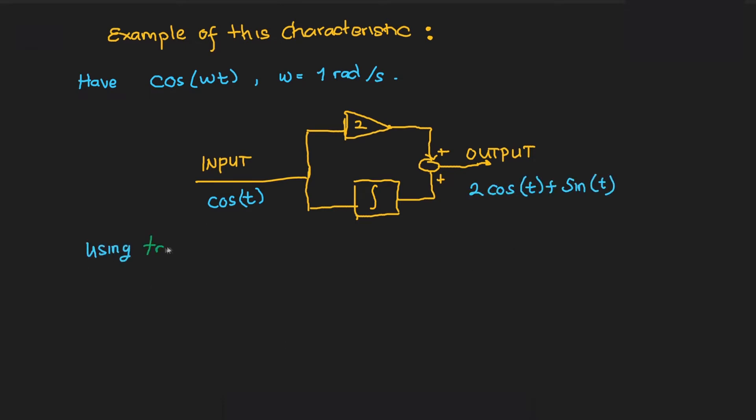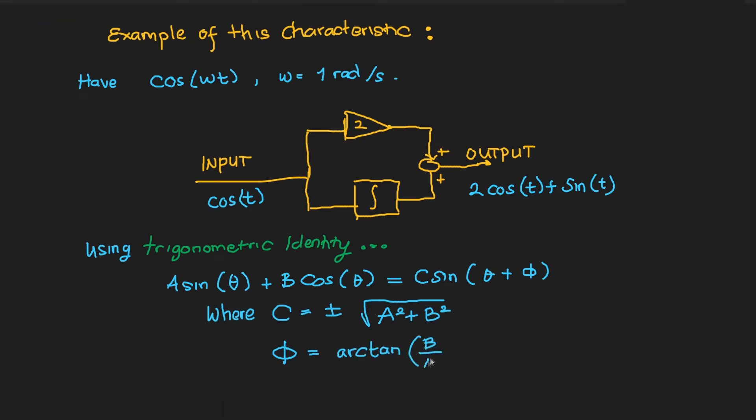Using a trigonometric identity to simplify things, the identity in question is A·sin(θ) + B·cos(θ) = C·sin(θ + φ), where C = √(A² + B²) and φ = arctan(B/A).